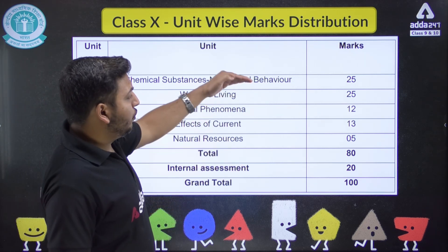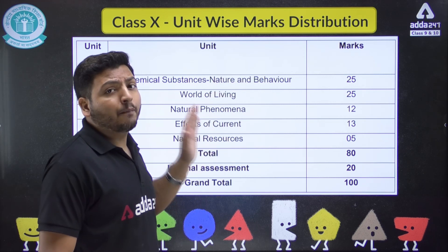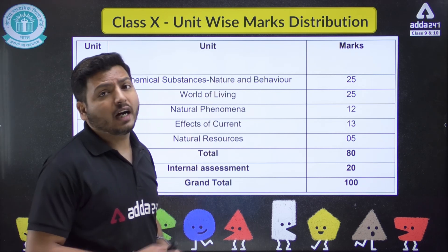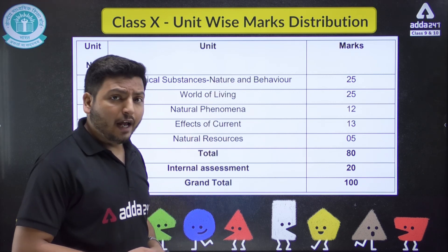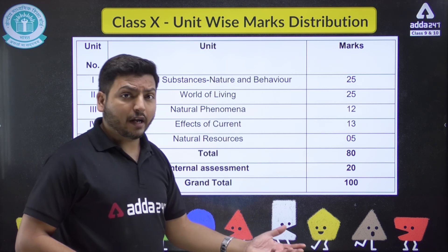This is the unit-wise mark distribution — which units have more weightage and which have less weightage is now clear. Your planning should be done accordingly.